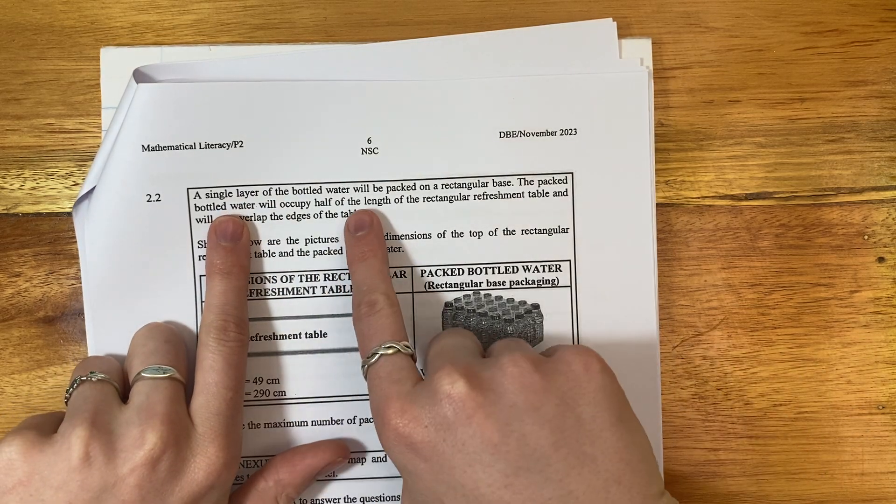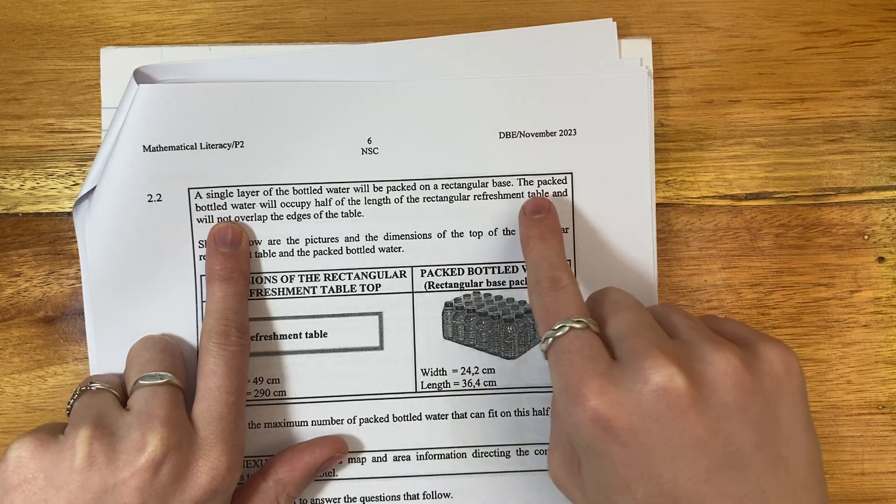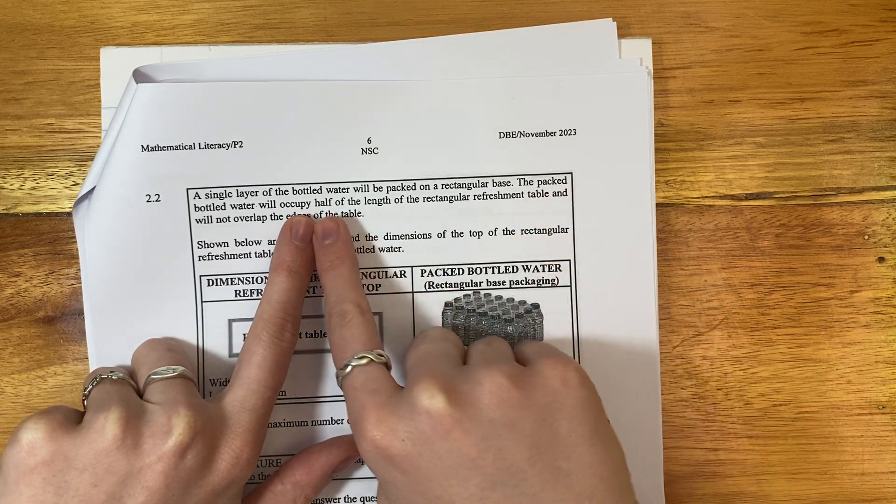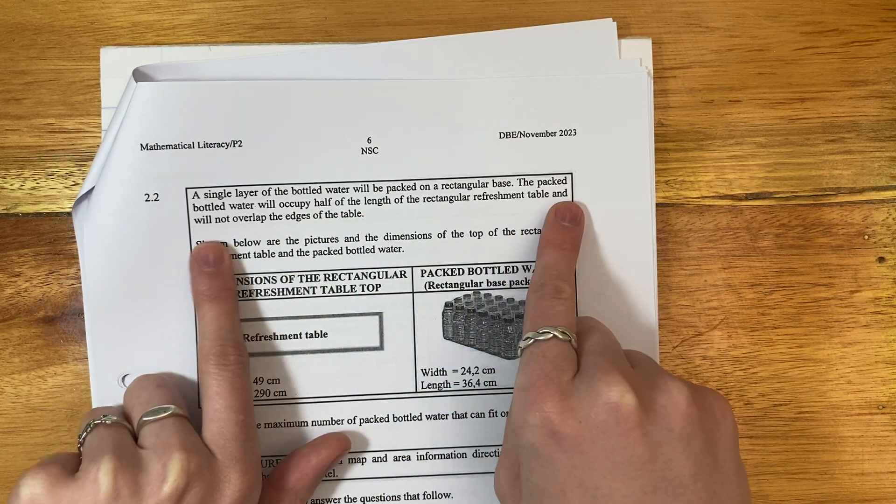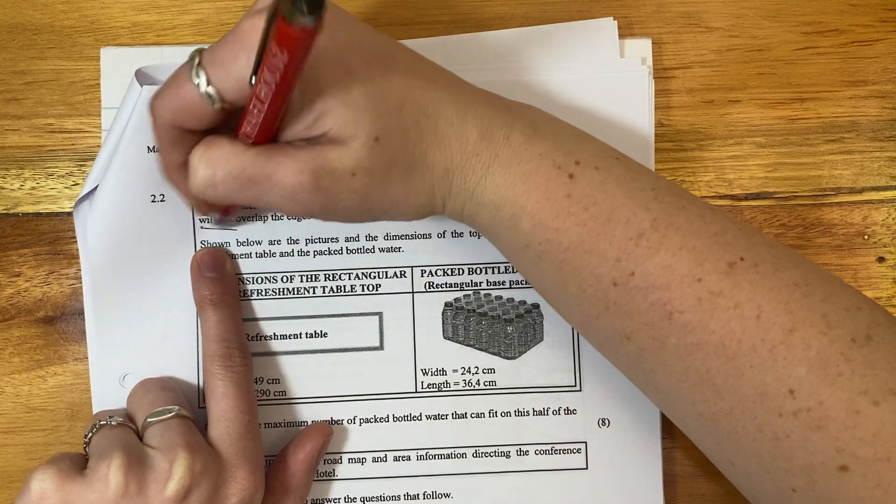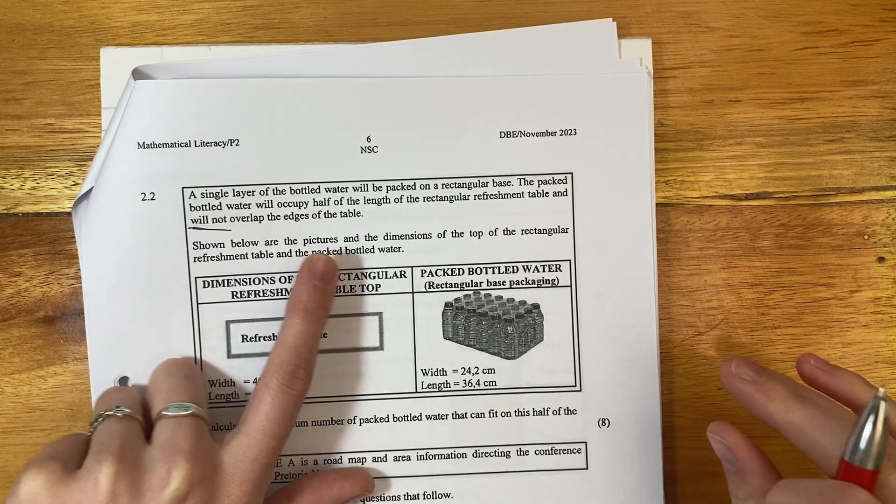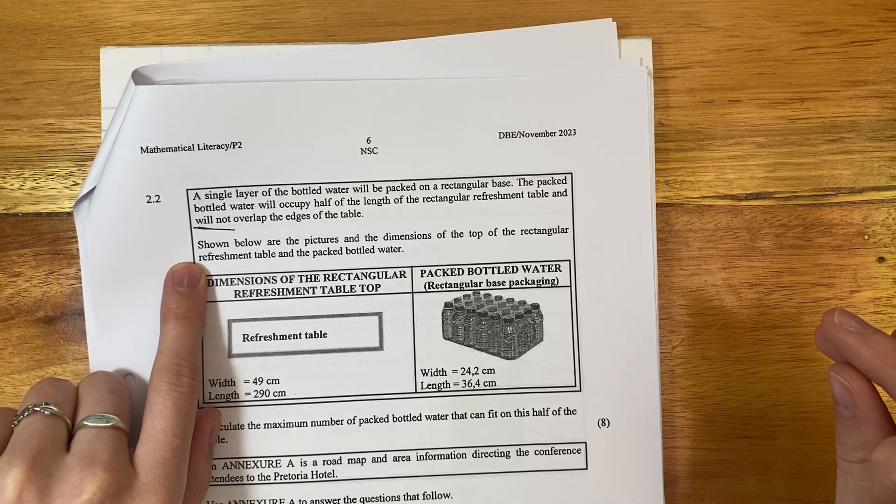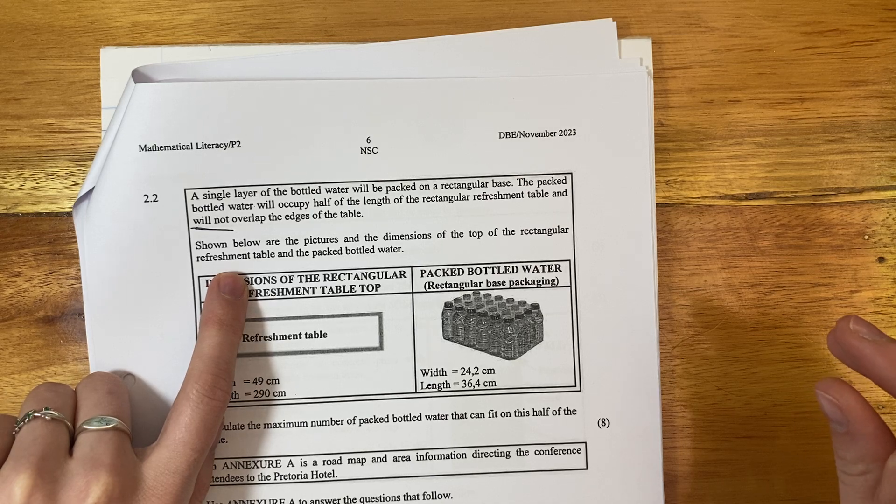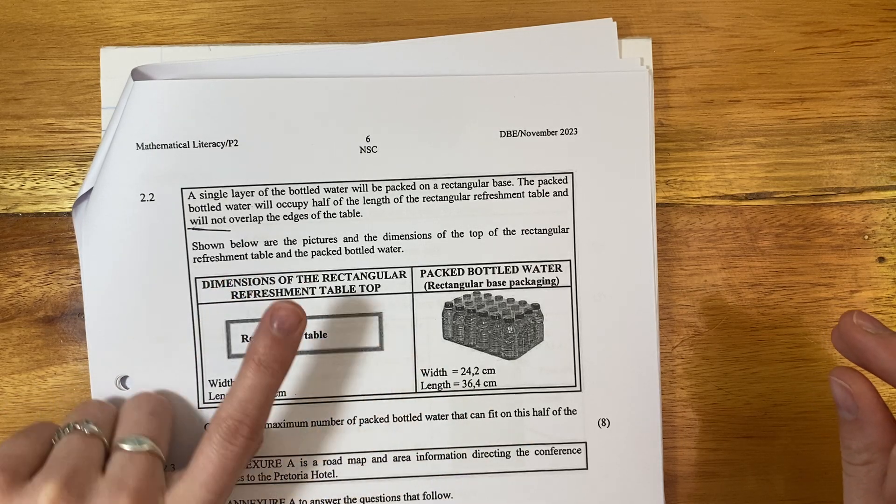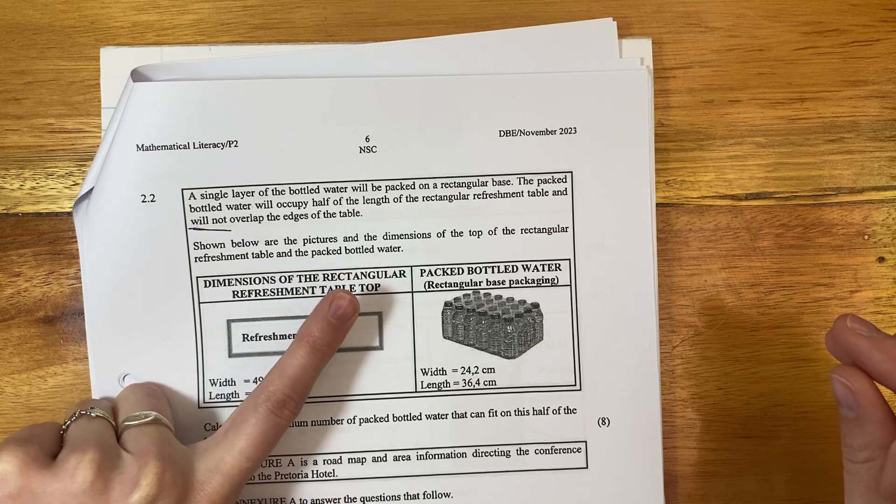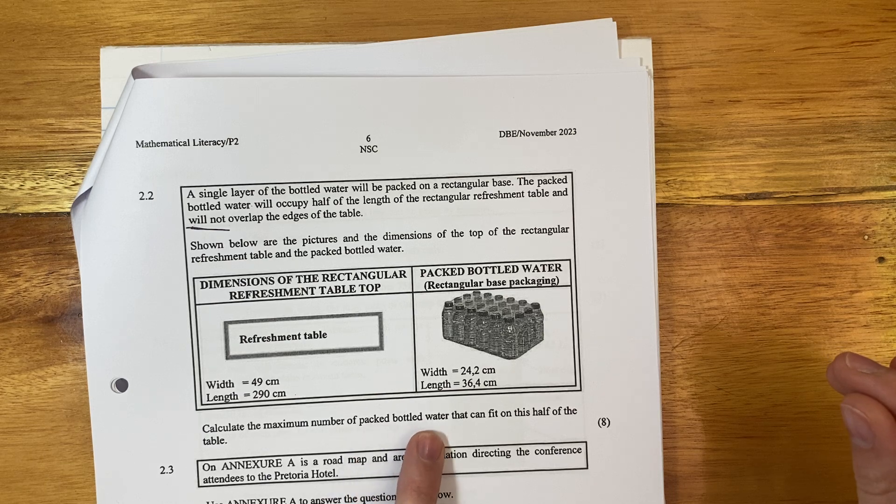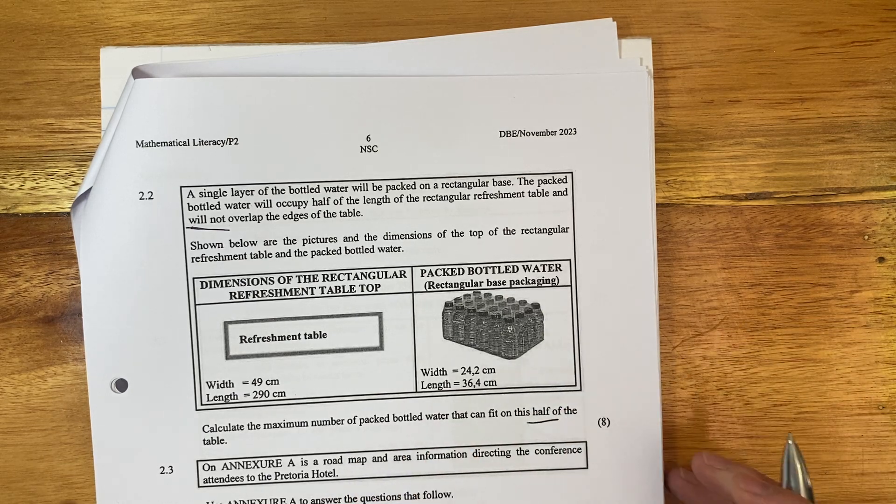A single layer of bottled water will be packed on a rectangular base. The packed bottled water will occupy half of the length of the rectangular refreshment table and will not overlap the edge of the table. So we can't have it just hanging off. Shown below are the pictures and dimensions of the rectangular refreshment table and the packed bottled water.